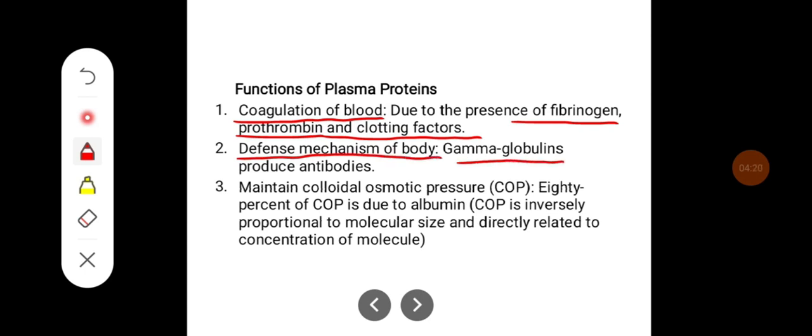Gamma globulins produce antibodies. They maintain colloidal osmotic pressure; almost 80 percent of colloidal osmotic pressure is due to albumin. Colloidal osmotic pressure is inversely proportional to molecular size and directly related to the concentration of the molecule.